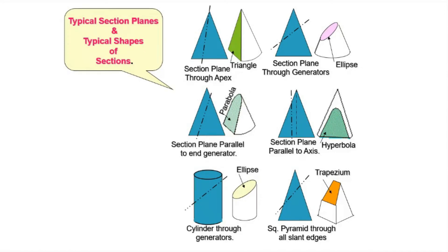Those are the four different shapes obtained by sectioning a cone. When you section a cylinder and the section plane is neither parallel nor perpendicular to the axis, you get an ellipse. When a square pyramid is cut through all the slant edges such that the section plane is neither perpendicular nor parallel to the axis, you obtain a trapeze. You will understand this better when we do some exercises.